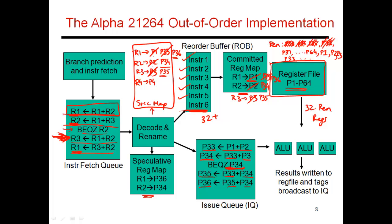So if I have a reorder buffer of, say, size 40, there's a good chance I'm using all 32 available rename registers. By having a larger reorder buffer, I'm also ensuring I have more instructions to look at, and the issue queue is more likely to find instructions to issue every cycle if it can look at this larger window. So in some sense, the size of the reorder buffer equals the size of the physical register file minus the size of the logical or architectural register file. If the physical register file has 64 entries and the architecture defines 32 registers, then I have 32 extra rename registers that can be used by in-flight instructions in the reorder buffer.